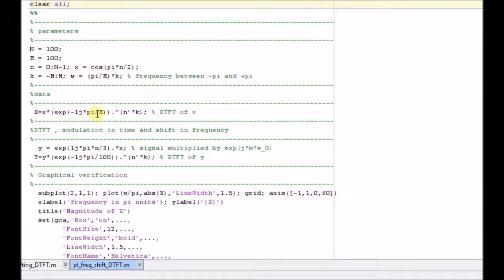Then we have the new signal y, which is basically a modulated version of the original signal, that is, it is multiplied by complex exponential, and then we have the uppercase Y, which is the DTFT of this new signal y.